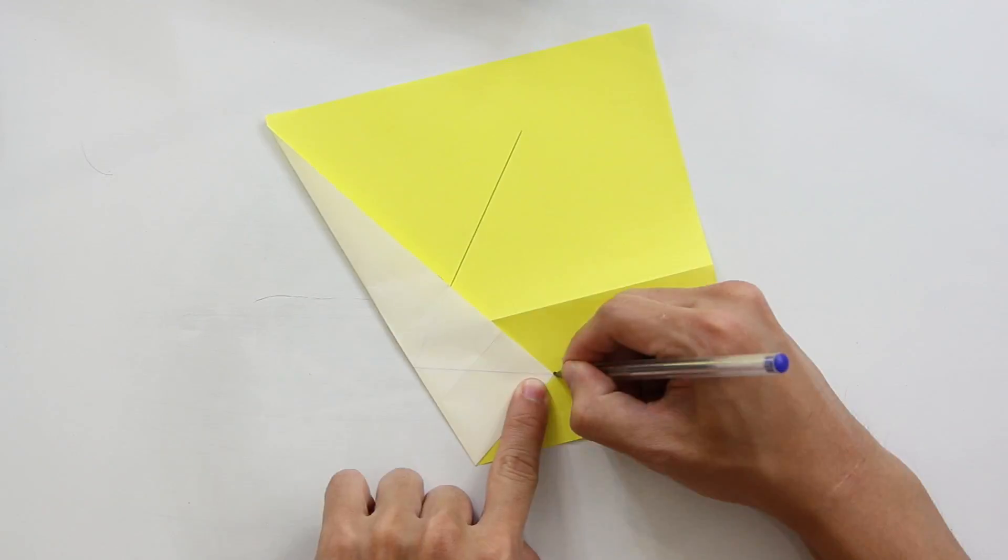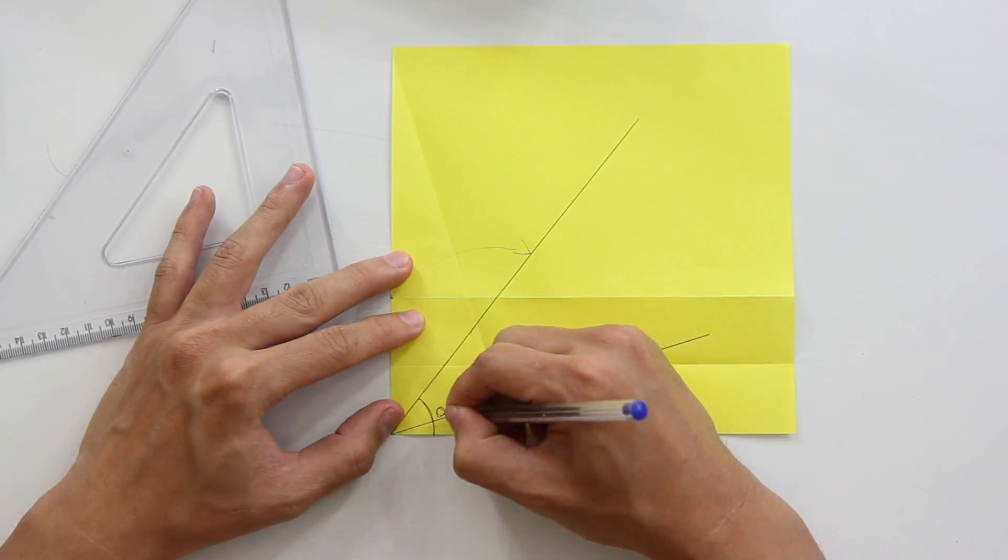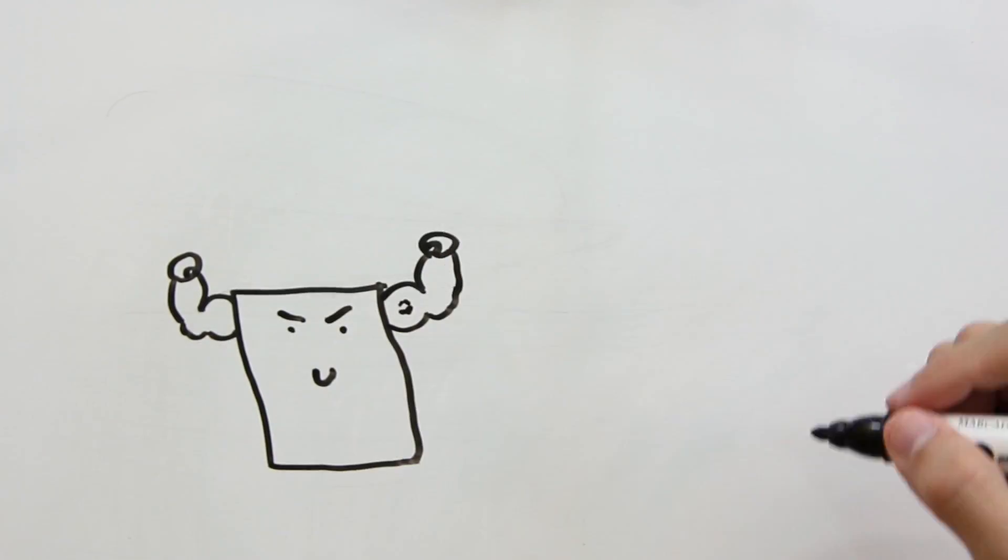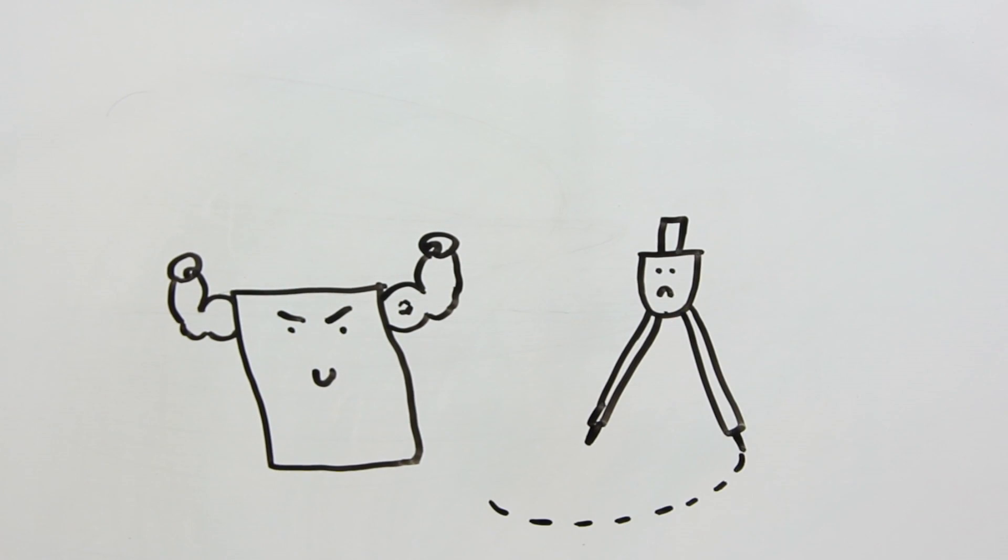Now this point here marks the trisection of this angle here. Well, basically it means that origami construction is stronger than straight edge and compass constructions.